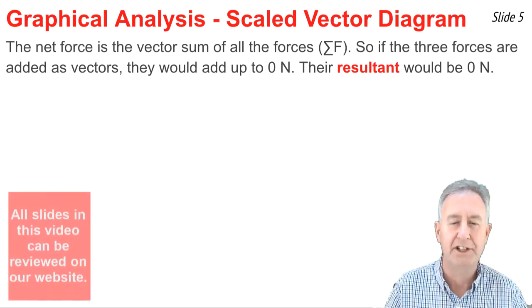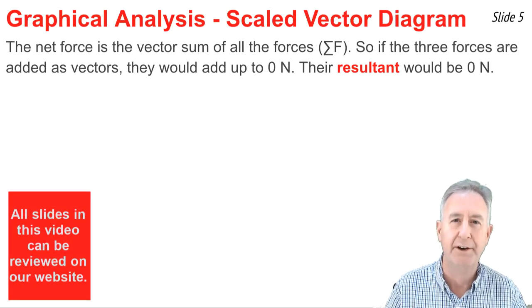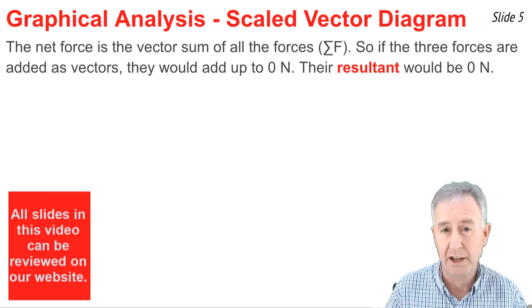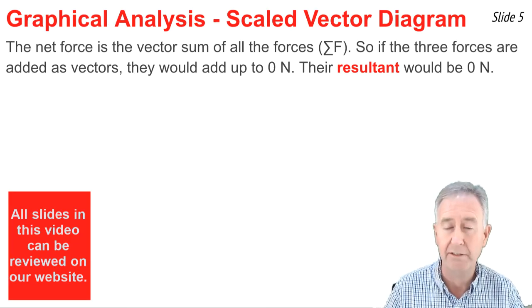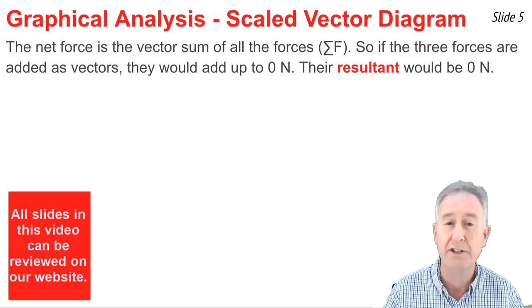The first part of our analysis is called a scaled vector diagram. Since the vector sum of all the forces is the net force, we would expect that if we added these three forces in head-to-tail fashion, that they would add up to zero newtons.